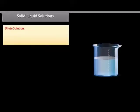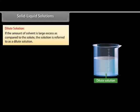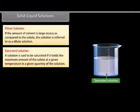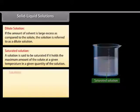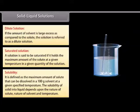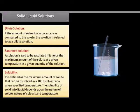A small amount of solute is dissolved in a large quantity of solvent. If the amount of solvent is in large excess compared to the solute, the solution is referred to as a dilute solution. A solution is said to be saturated if it holds the maximum amount of solute at a given temperature in a given quantity of solution. Solubility is defined as the maximum amount of solute that can be dissolved in 100 grams of solvent at a given specified temperature. The solubility of solid into liquid depends upon the nature of solute, nature of solvent, and temperature.